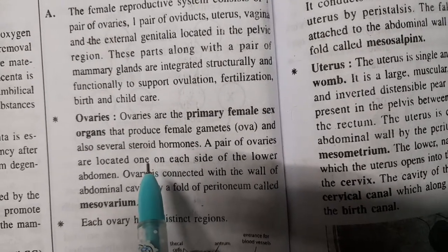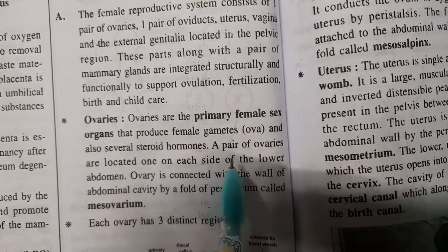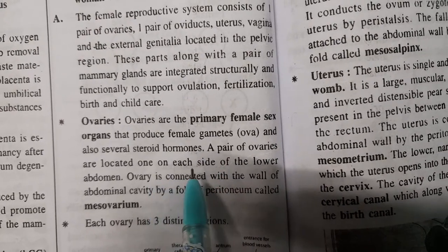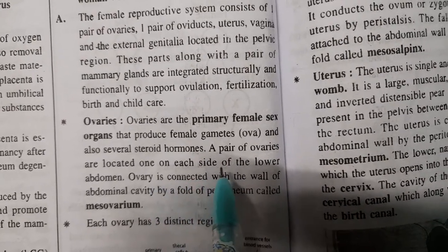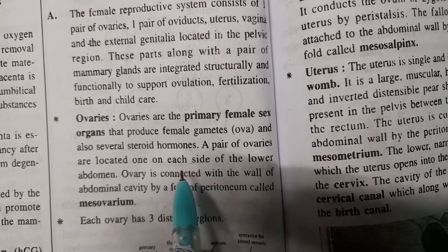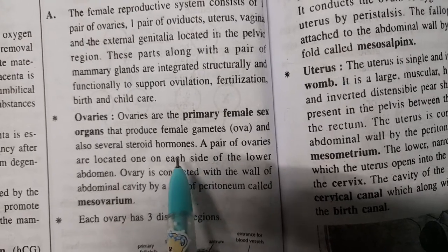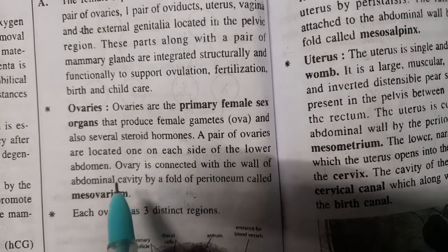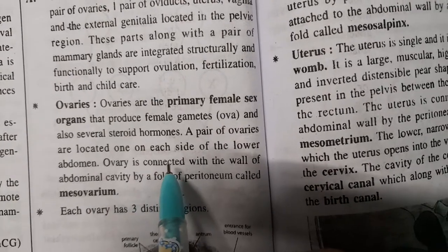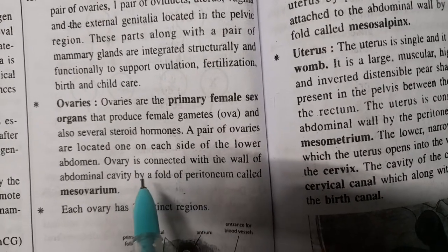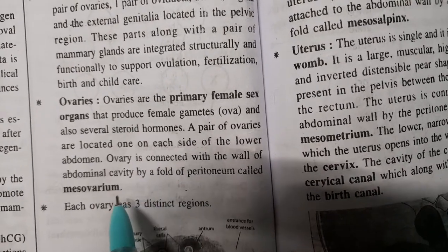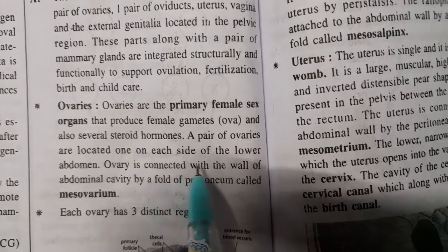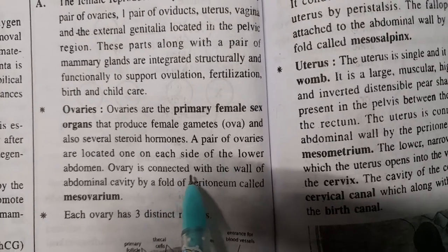There is a pair of ovaries, one on each side of the lower abdomen — one on the right side and one on the left side. The ovary is connected with the wall of the abdominal cavity by a fold of peritoneum called the mesovarium.